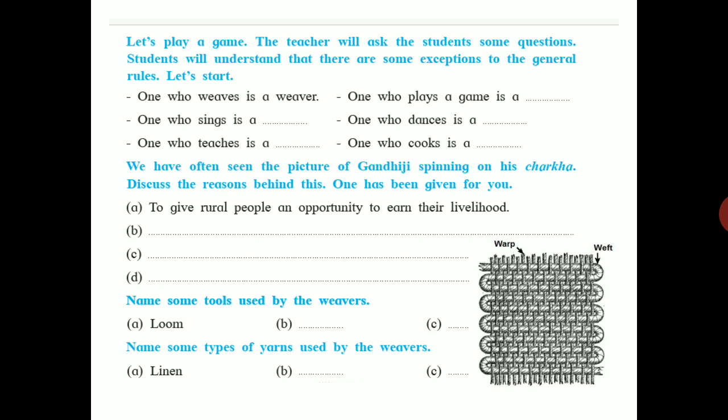There is a famous theory of Gandhiji — the 3H theory — which considers hand, head, and heart as three important things. According to this theory, a person should have some kind of work in his hands, which will definitely affect his head and heart. Hand, head, and heart — these three things are important according to this theory.